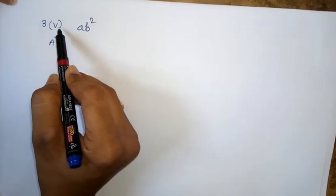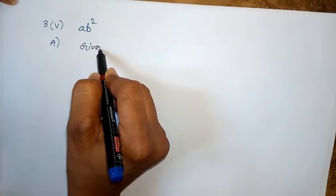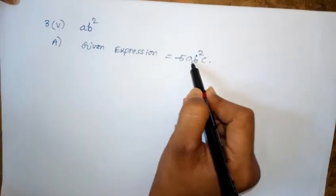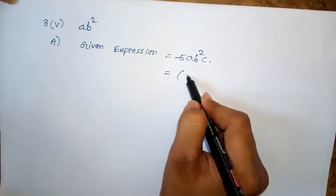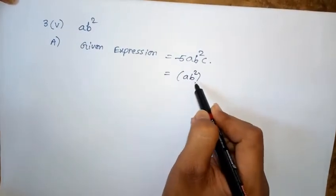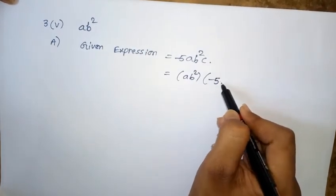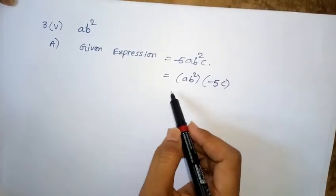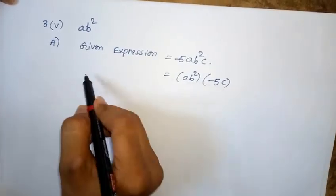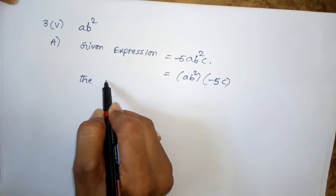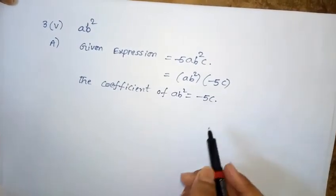Third problem, fifth one: find the coefficient of ab². Given expression minus 5ab²c is also written as ab² into minus 5c. So the coefficient of ab² is equal to minus 5c.